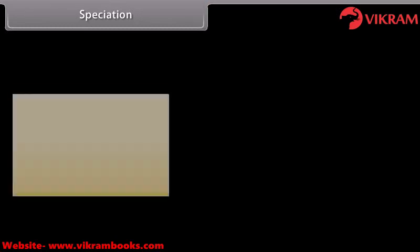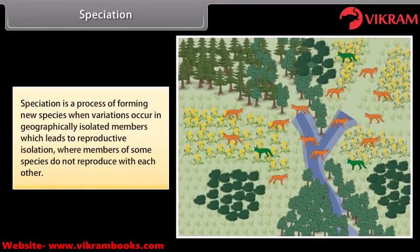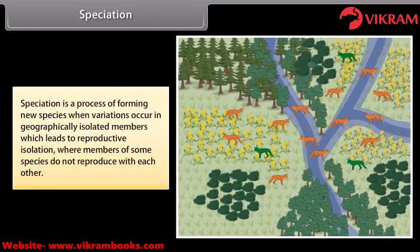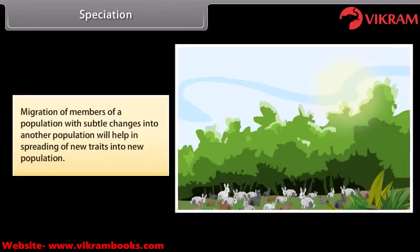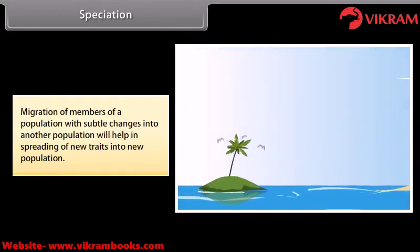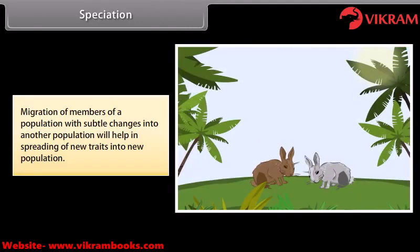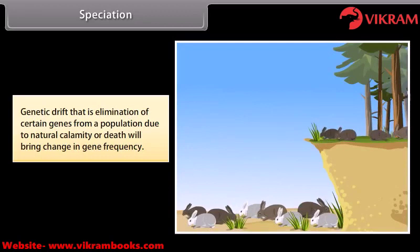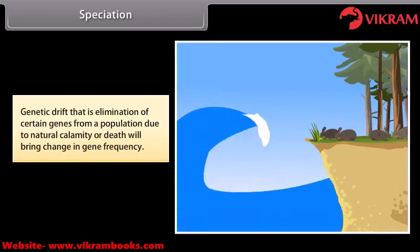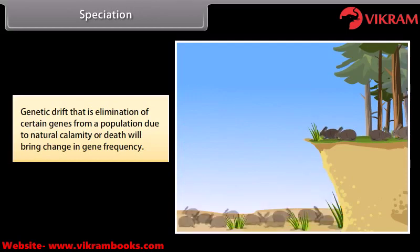Speciation is a process of forming new species when variations occur in geographically isolated members, which leads to reproductive isolation where members of some species do not reproduce with each other. Migration of members of a population with subtle changes into another population helps in spreading new traits. Genetic drift — the elimination of certain genes due to natural calamity or death — will bring change in gene frequency.